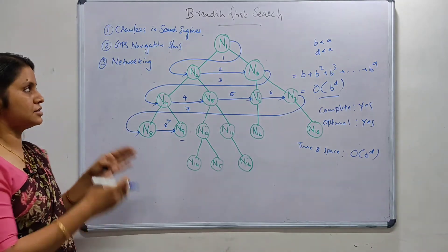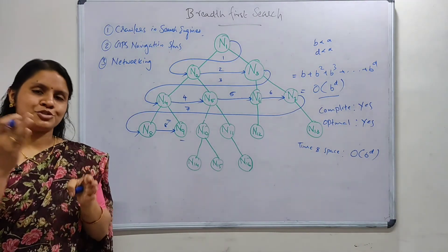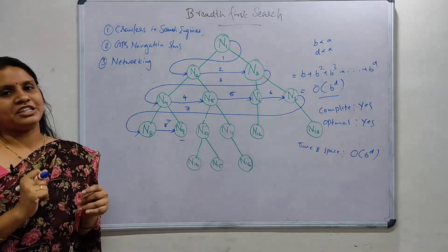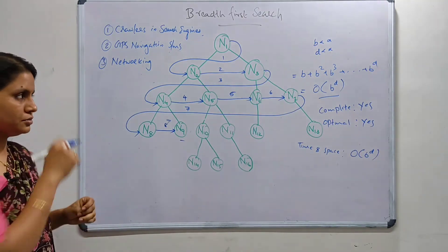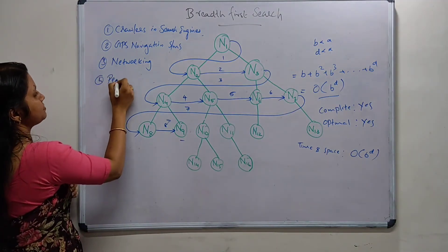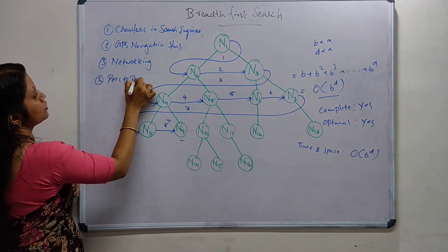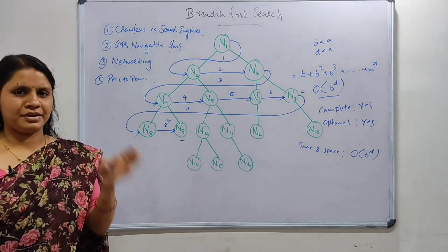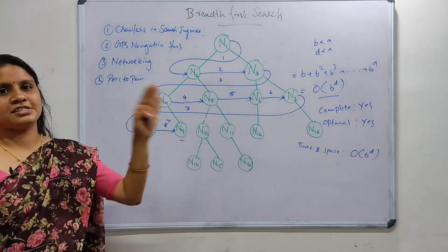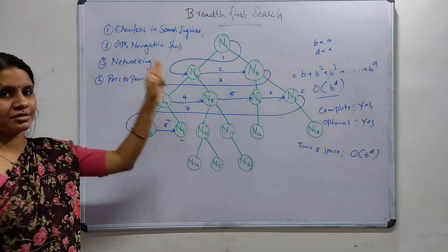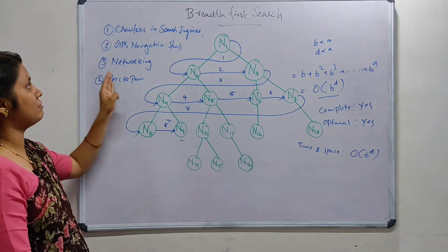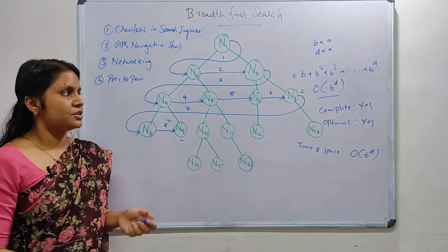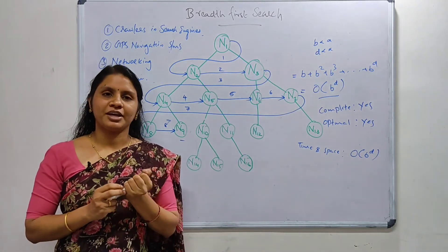BFS is also used in networking, where packets follow a traversal method to reach all other networking nodes. BFS is used as the algorithm to broadcast packets across all nodes in a network. The fourth application is peer-to-peer communication and networking. So the real applications of BFS are: crawlers in search engines, GPS navigation systems, networking, and peer-to-peer communication.